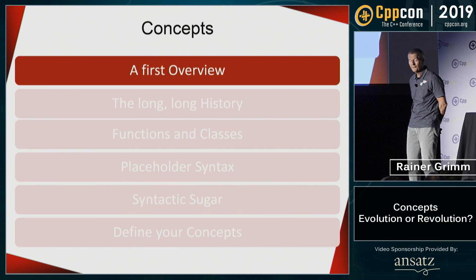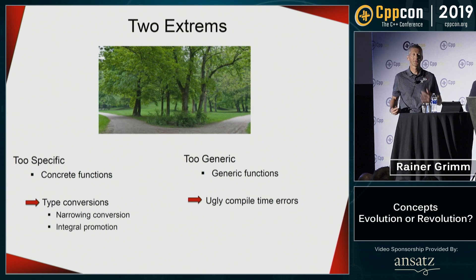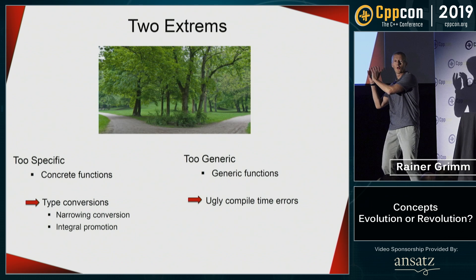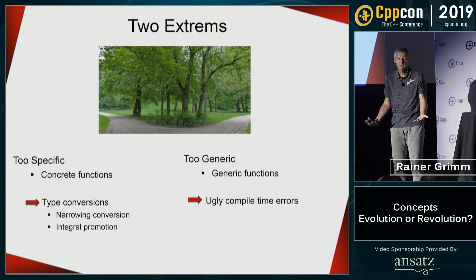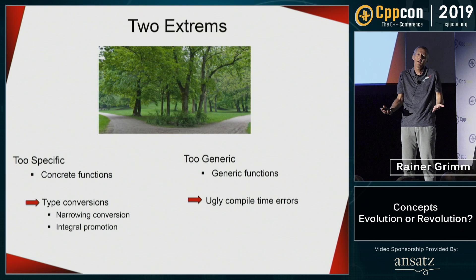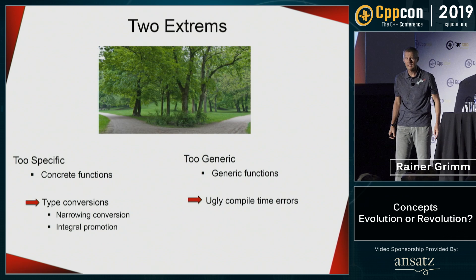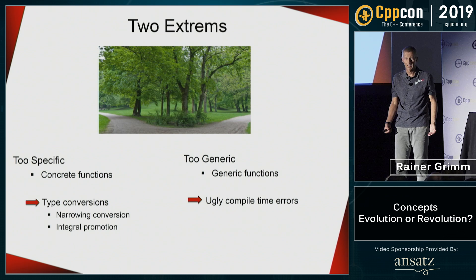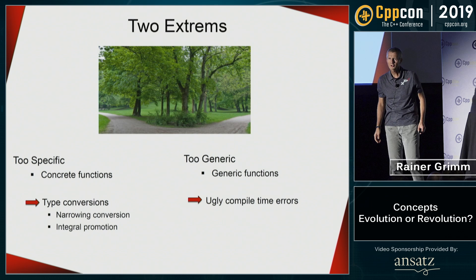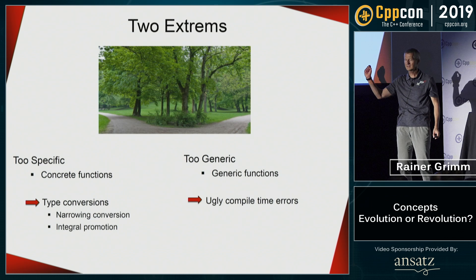For a first overview: we have two issues in C and C++. We have functions which work on one type, and functions which work on all types — both are, for me, the wrong ways. When you have a function that only works on one type, you have to define it for each type, or you run into issues like narrowing conversion or integral promotion. Narrowing conversion means you can use a double to initialize an int, which is extremely bad. Integral promotion means, for example, adding bool plus bool gives int, which is also crazy.